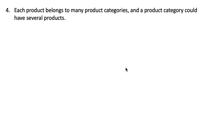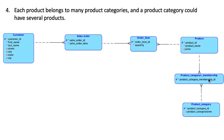The next rule says each product belongs to many product categories. For example, a particular product may be classified as both an electronics product and a medical product simultaneously. A product category could also have several products within it — for example, the electronics category could contain thousands of products. This is once again a many-to-many relationship between Product and Product Category.